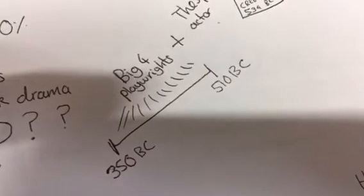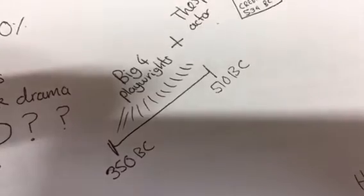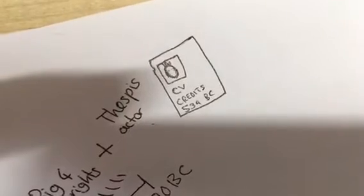Between 510 BC and 350 BC, we had the big four playwrights, including Sophocles and Euripides, and in 534 BC, we had Thespis, the first known actor.